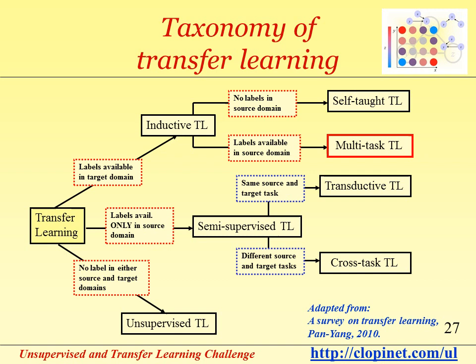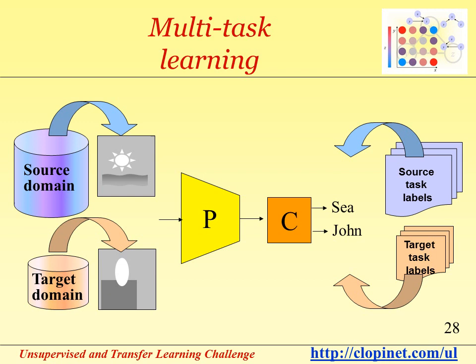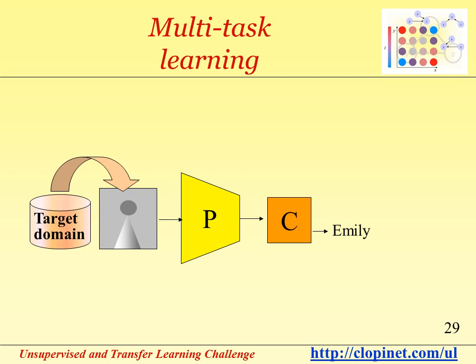We are going now to explore another branch of the taxonomy of transfer learning. Let us look into inductive transfer learning, which is the case where labels are available in the target domain — and more particularly, the case when labels are also available in a source domain, which we call multitask transfer learning. In multitask transfer learning, we can train a system consisting of a preprocessor and a classifier simultaneously on data from a source domain and from a target domain.